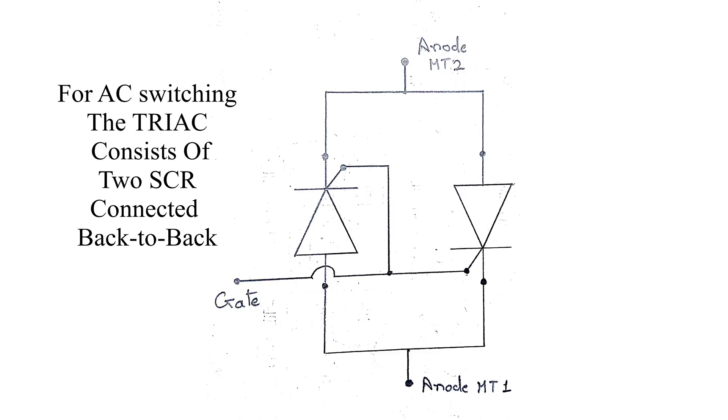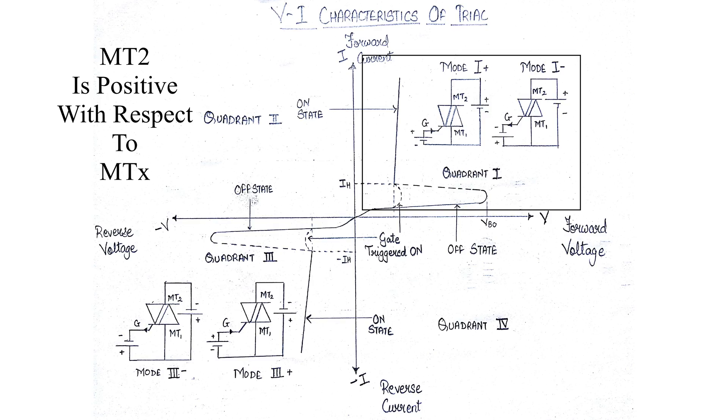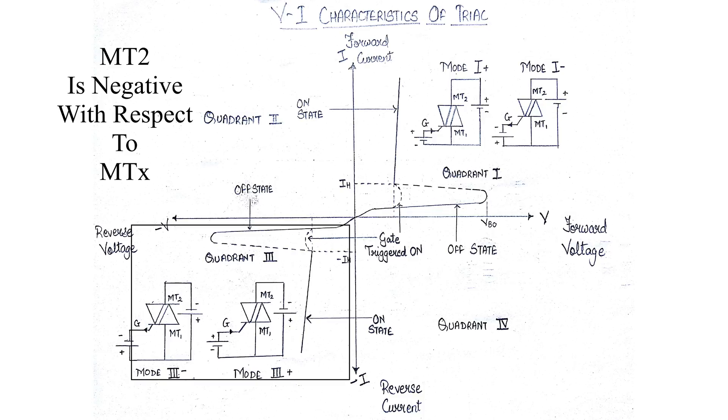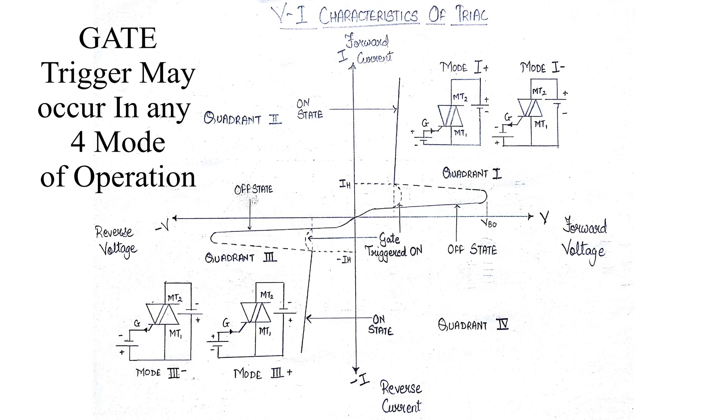In the first quadrant, MT2 is positive with respect to MT1, and in the fourth quadrant it is in the negative area. The gate trigger may occur in any four quadrant mode of operation. If the device is in the on state, the conduction permits a large amount of current to flow through it. The gate is a control terminal and the proper signal is applied to the gate, therefore the firing angle of the device is controlled.